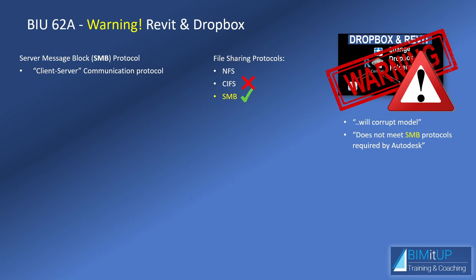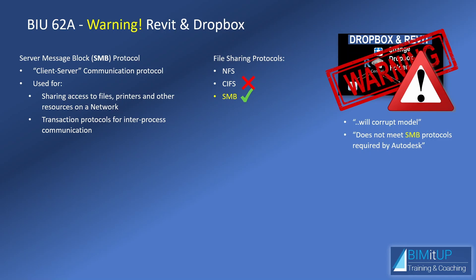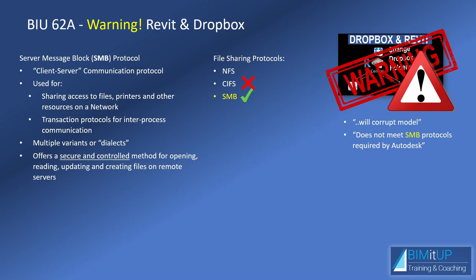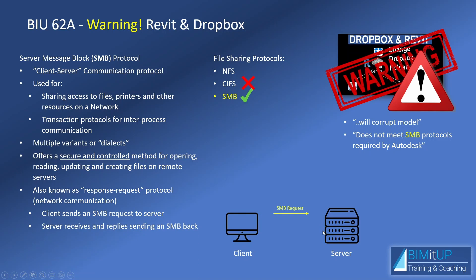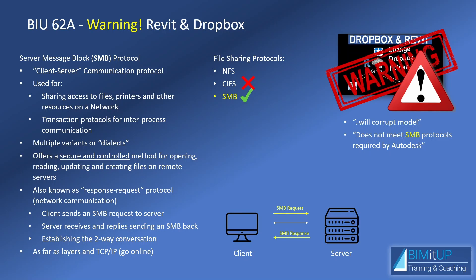Instead we'll focus on SMB, which seems to be the winner. Server Message Block, or SMB protocol — what is it? It is a client-service communication protocol. What is it used for? It is used for sharing access to files, printers, and other resources on a network, and transaction protocols for inter-process communication. It offers a secure and controlled method for opening, reading, updating, and creating files on remote servers. It is also known as a request-response protocol. In this model, a client sends an SMB request to the server, the server receives that request and sends a reply back, establishing a two-way conversation.